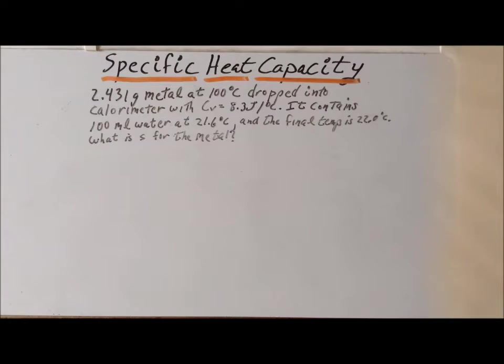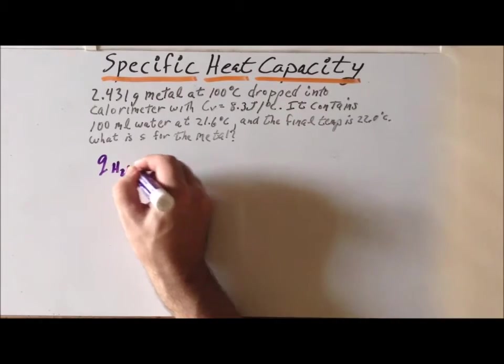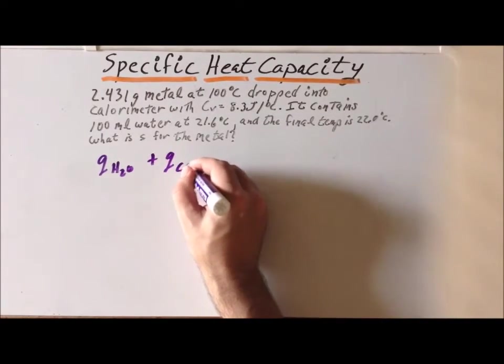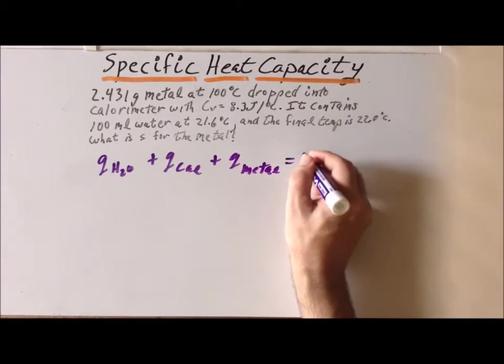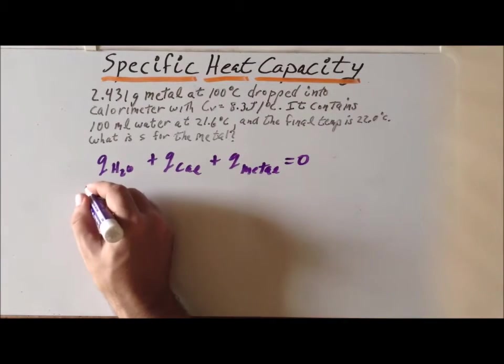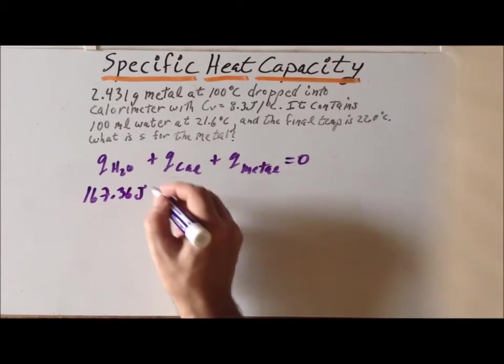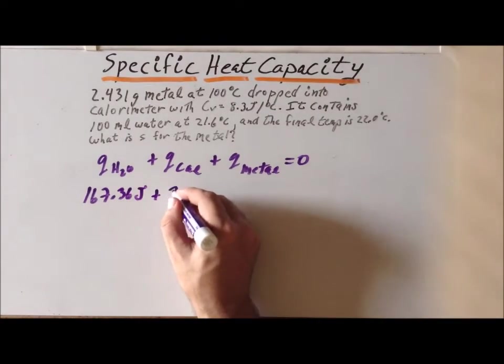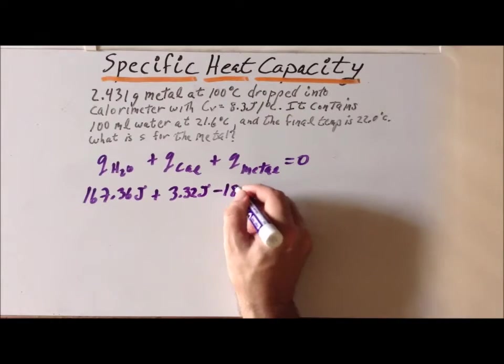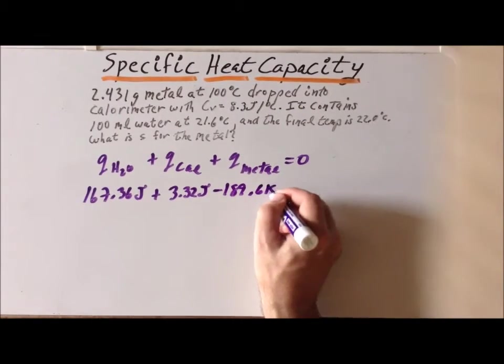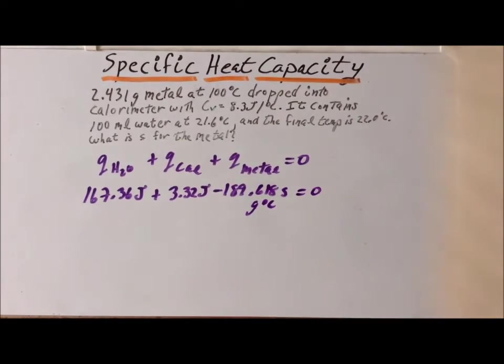Now, we can apply the law of conservation of energy, which tells us that Q H2O plus Q for the calorimeter plus Q for the metal has to be equal to zero. So, we can plug into the equation 167.36 joules for the water, 3.32 joules for the calorimeter, and minus 189.618 S grams degree centigrade for the metal.